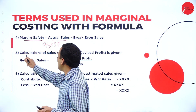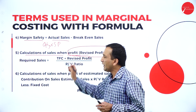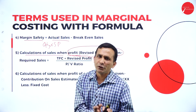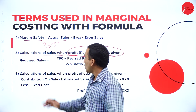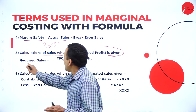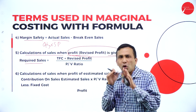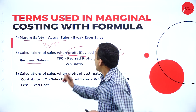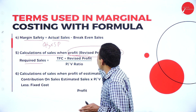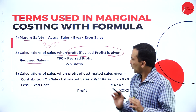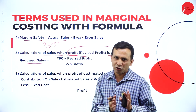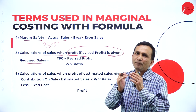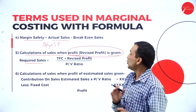Next, margin of safety. The margin of safety is calculated as the actual sales value given in the question minus breakeven sales. For example, if quantity or budgeted production is given, then quantity into selling price gives actual sales. The actual sales value we use to calculate margin of safety is actual sales minus breakeven sales, so easily we can find the margin of safety. For the calculation of required sales when profit is given: the formula is total fixed cost plus desired profit in the numerator, divided by PV ratio. The PV ratio is contribution divided by sales into 100.